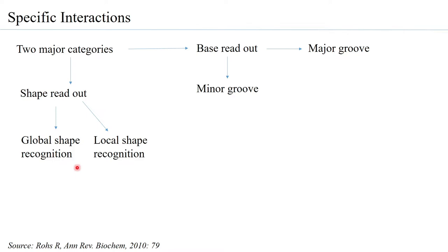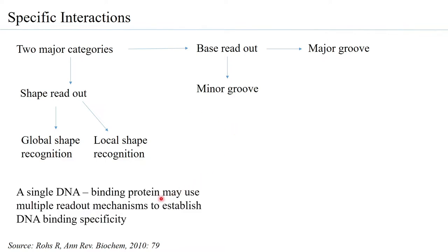In global shape recognition, the entire DNA is bent, whereas in local shape recognition, only one position shows a bend. A single DNA-binding protein may use both base readout and shape readout to establish DNA-binding specificity. Studies have shown it is always a combination of base readout and shape readout that governs protein-DNA interaction, and it is very difficult to attribute binding solely to one or the other.